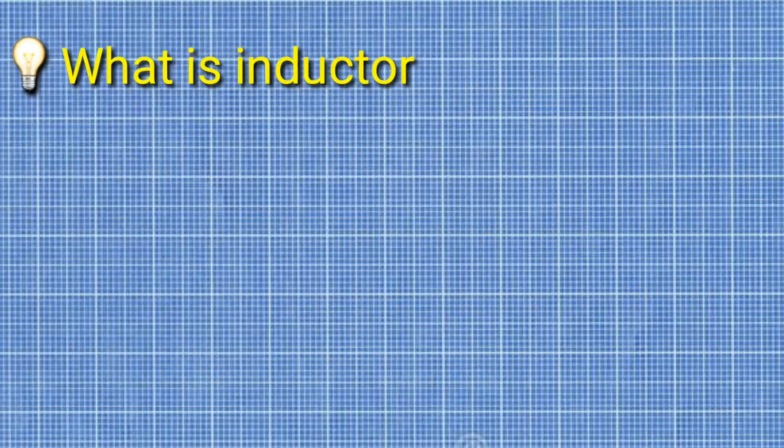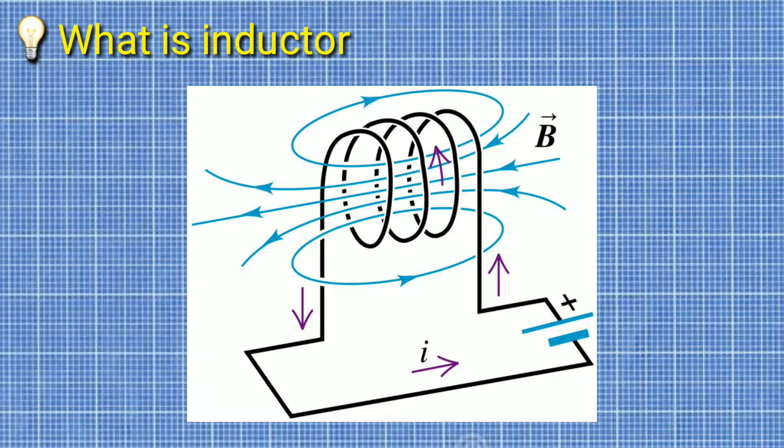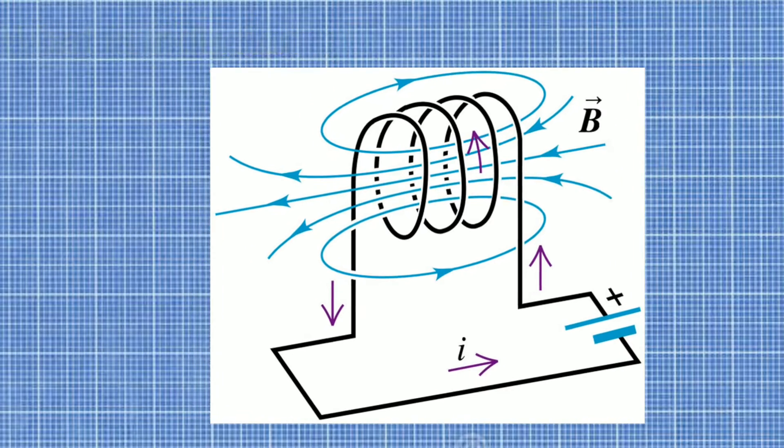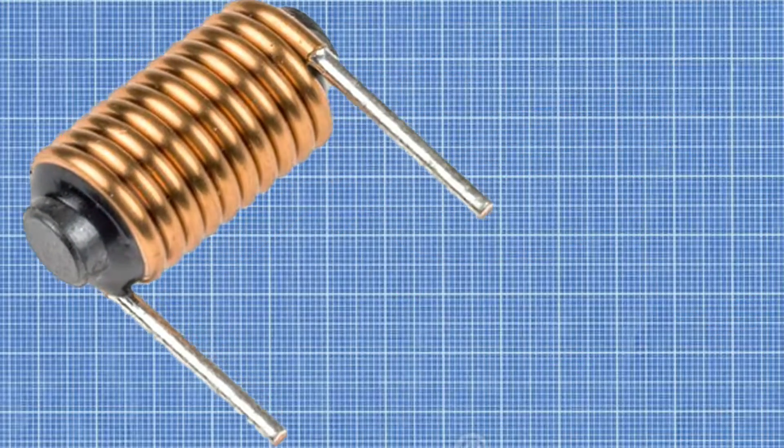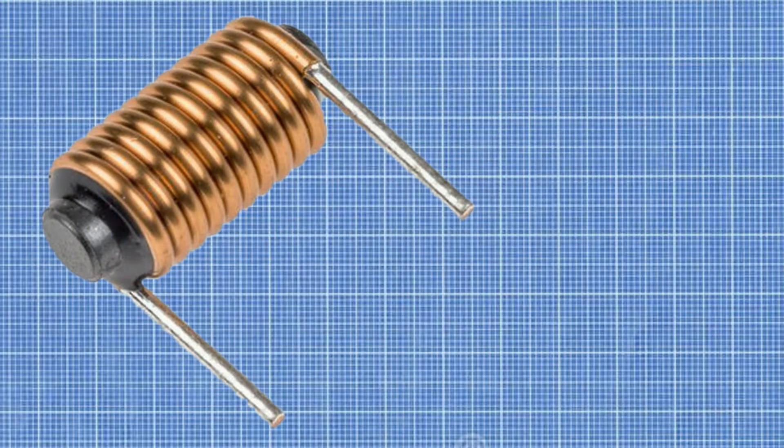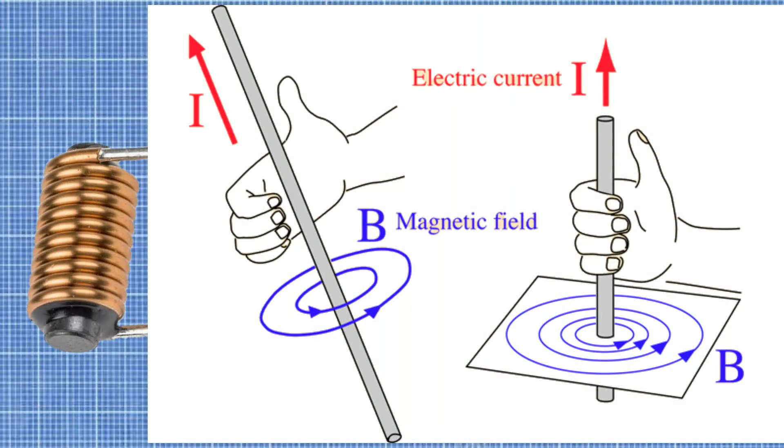So the first is what is inductor? An inductor is a component in electrical circuit which stores energy in its magnetic field. It can release this energy almost instantly. An inductor is also called coil, choke or reactor. Inductor is a passive two-terminal electrical component that stores energy in a magnetic field when current passes through it.